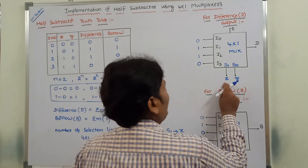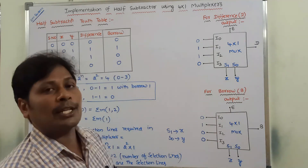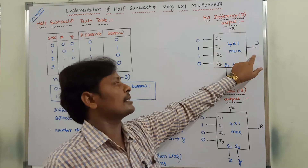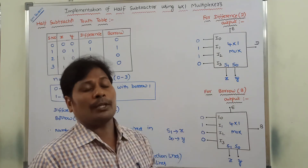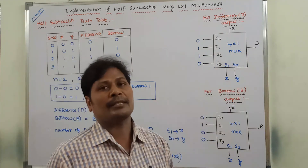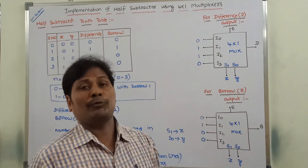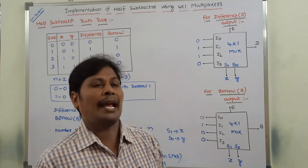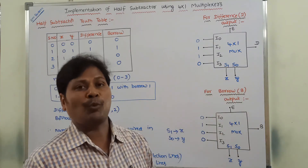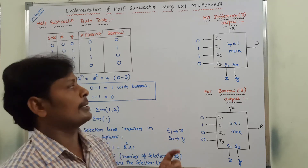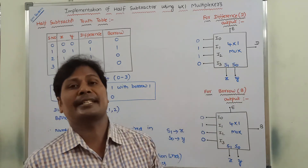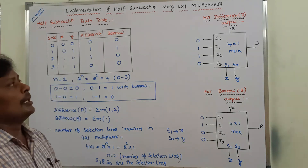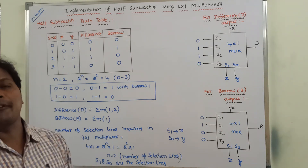When X and Y selection input values are 0,0 — I0 input is selected and sent as the output. When X and Y values are 1,0, the equivalent decimal value is 2, so I2 input is selected and sent as the output. In this way, we implement half subtractor using 4 by 1 multiplexer.